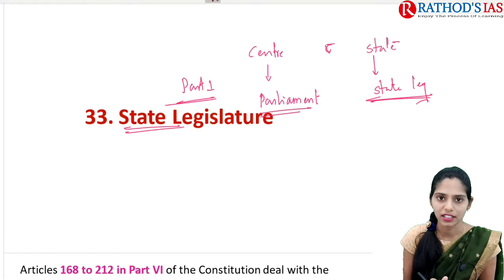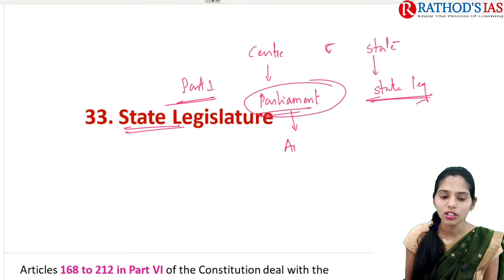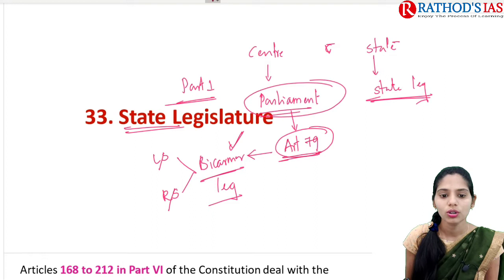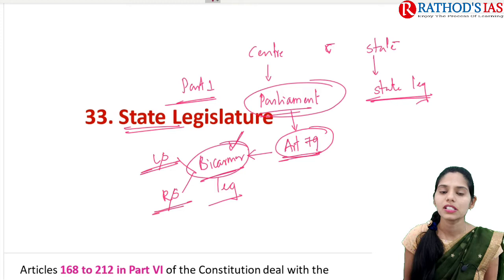If you are talking about the Parliament, our Constitution according to Article 79 of the Indian Constitution mainly talks about Bicameral Legislation. Under Article 79, which mainly talks about Bicameralism, there are two houses — that is Lok Sabha and Rajya Sabha. Lok Sabha is the lower house and Rajya Sabha is the upper house. Bicameral Legislation means there are two houses and it is compulsory.